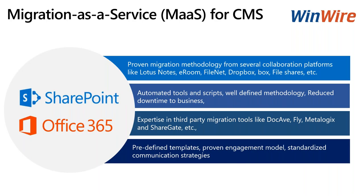For content management and document management systems, WinWire has a proven migration methodology starting from Lotus Notes, FileNet, Dropbox, or any other content and document management platforms. We have automated tools and scripts and also leverage third-party tools depending on the scenario. We evaluate which tool best fits based on content type, volume, and timeline. The tools we commonly use include AvePoint, DocAve, Fly, ShareGate, and Metalogix for SharePoint migration, and Fly for tenant-to-tenant migration in Office 365.